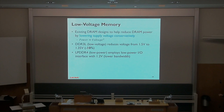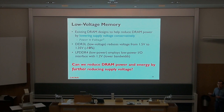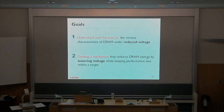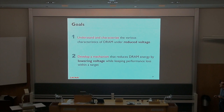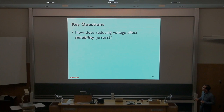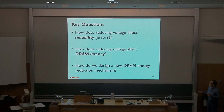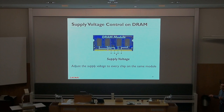The key question is: can we reduce DRAM power and energy by further reducing the supply voltage? The first step is understanding and characterizing the various characteristics of DRAM under reduced voltage. Then, based on that understanding, develop a mechanism that reduces DRAM energy by lowering voltage. We built an infrastructure where you can adjust the supply voltage to every chip on the same module, based on SoftMC with a voltage controller appended, where you can adjust supply voltage and schedule DRAM commands.